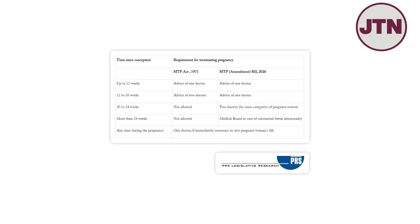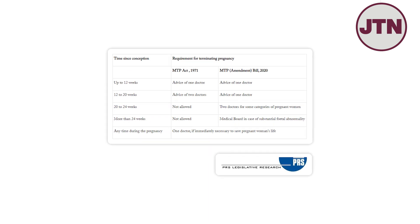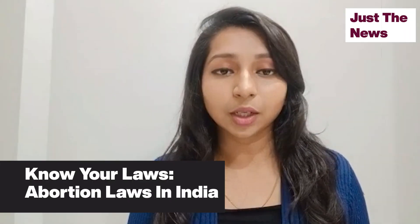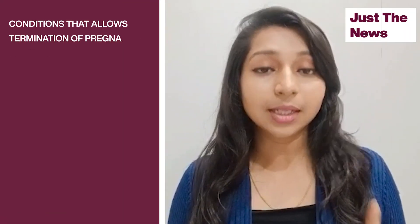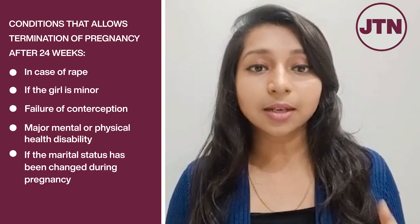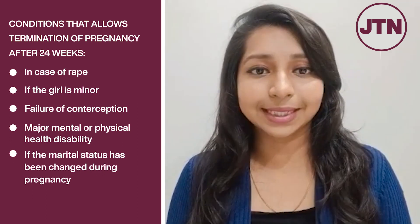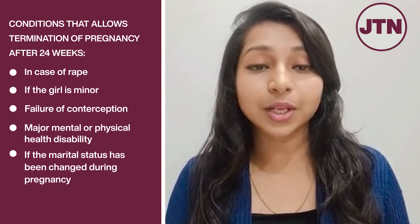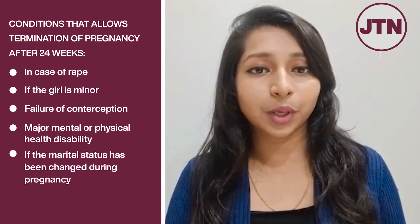If you have to do an abortion after 24 weeks, there will be a state-level medical board set up to decide this. After 24 weeks, abortion is allowed under these conditions: first, in case of rape; second, if the girl is a minor; third, failure of contraception; fourth, if there is a major physical or mental disability; fifth, if the pregnancy has changed the person's marital status, or if she is divorced, among many other situations.